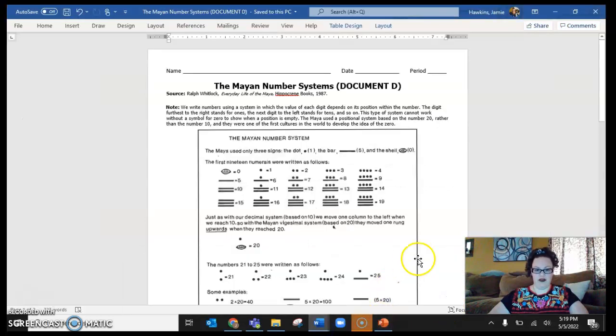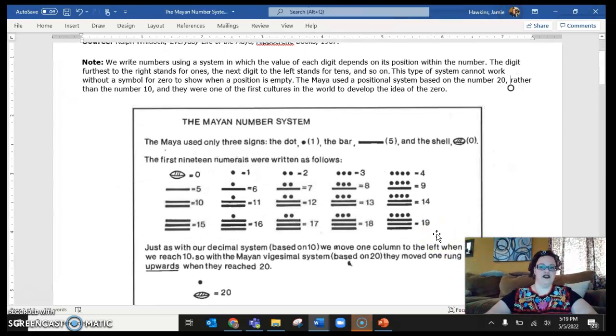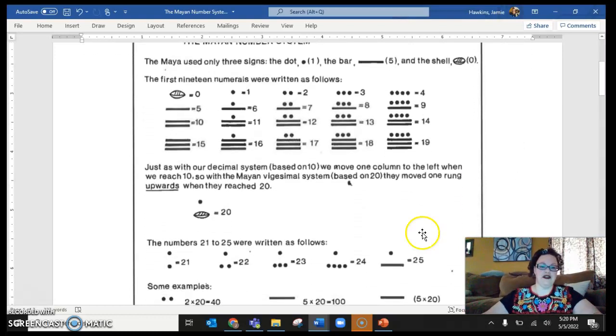Okay, so you have your document in front of you now. Let's read the note first. We write numbers using a system in which the value of each digit depends on its position within the number. The digit furthest to the right stands for ones. The next digit to the left stands for tens. So on. You know how place value works in our number system. This type of system cannot work without a symbol for zero to show when a position is empty. The Maya used a positional system based on the number 20 rather than the number 10, and they were one of the first cultures in the world to develop the idea of zero, especially as a placeholder. So like I was saying before, the Maya only used three signs. They used the dot to represent one, the bar to represent five, and the shell to represent zero. So numbers zero through 19 were written exactly like this. Pause if you need more time to look at it.